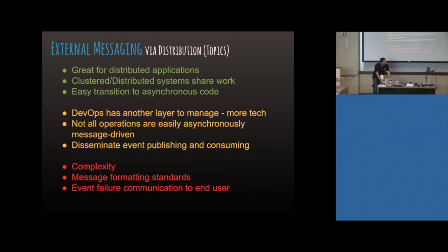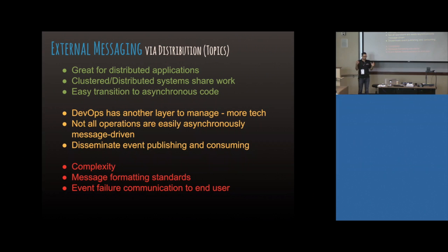So why would you use this? The advantages counter the downsides of internal eventing. However, DevOps now has another layer to manage. We've got a DevOps team and constantly there are issues: someone created a bad topic, the replication level is set wrong, can you fix that because we don't have admin rights? Not really my problem, but it's the organization's problem. Kafka is pretty reliable and doesn't go down often, but it can happen.